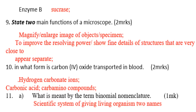Carbon dioxide is transported in blood as hydrogen carbonate ions, carbonic acid, and carbamino compounds. Number eleven: what is meant by the term binomial nomenclature?